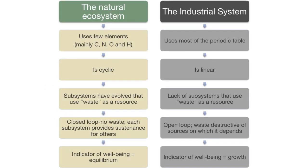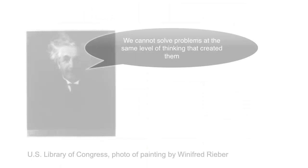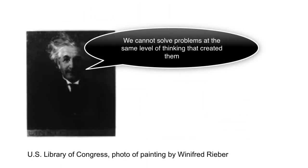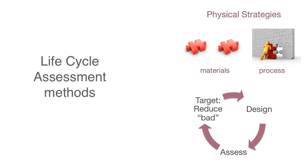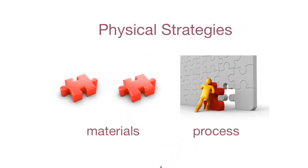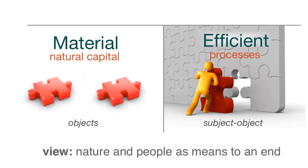In comparing natural systems and industrial systems, we see two very different approaches and consequences. How might we do things differently in the industrial system? This begins with recognizing that we cannot solve problems with the same level of thinking that created the problem. Design strategies that use life cycle assessment methods usually focus on changes in the domain of physical things, such as materials and processes — which is within the same industrial-level thinking of using the Earth and its bounty as objects to be manipulated for our use. In other words, one view is to consider all of nature as a means to an end, which is the same level of thinking that created the problem in the first place.